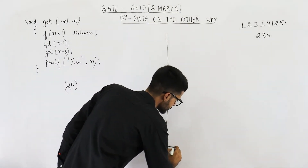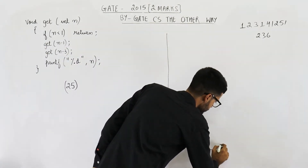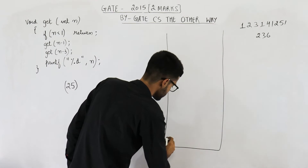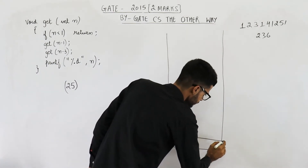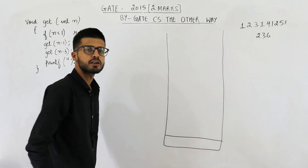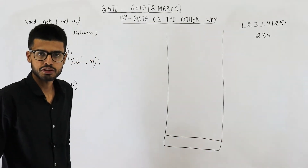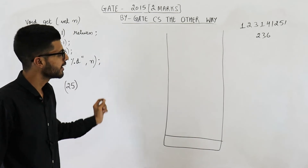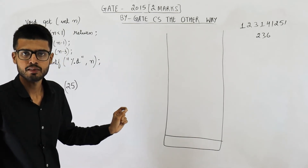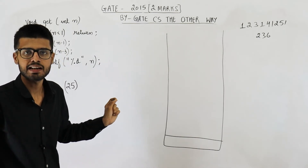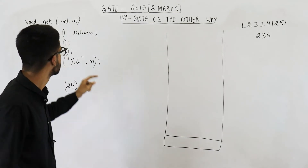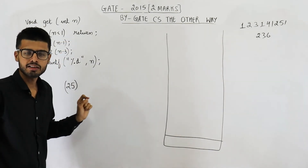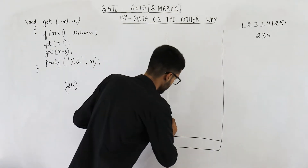Suppose this is the stack. Inside the stack, suppose this is the activation record for the main function. In the main function, suppose you have encountered a line which says get(2). So this function is called and the parameter that we are passing is 2.